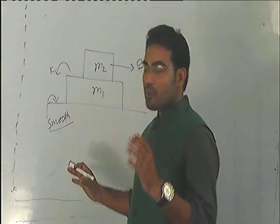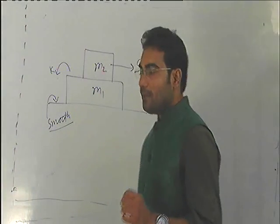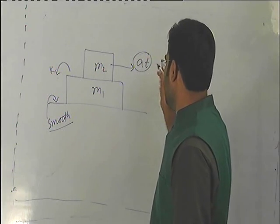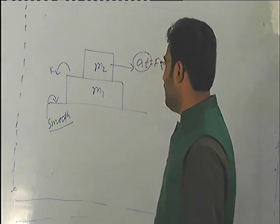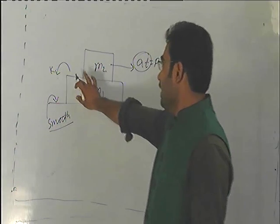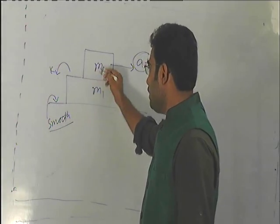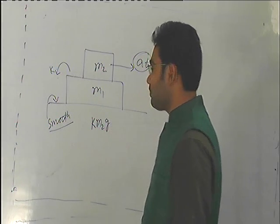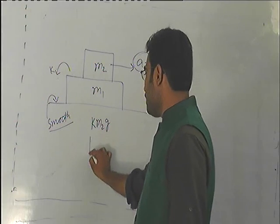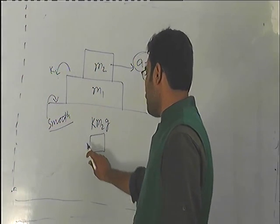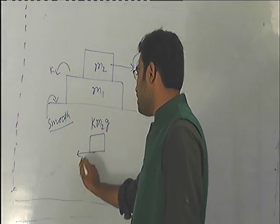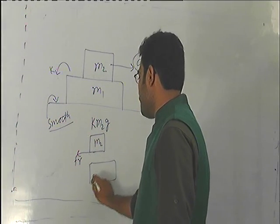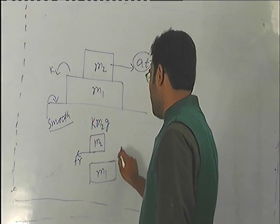In this problem, M1 and M2 are two blocks. M2 has a force at applied to it. This is a time dependent force. M1 and M2 have friction between them with coefficient K. M2 will experience friction in the right direction and M1 will experience friction in the left direction.